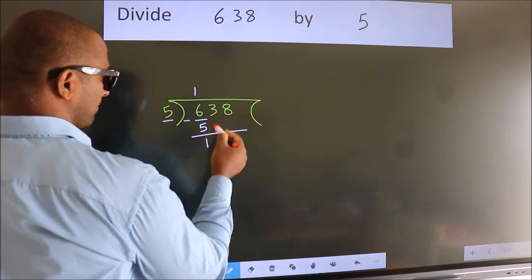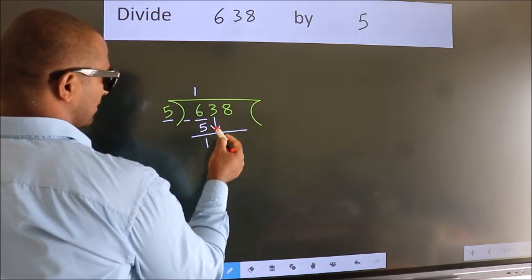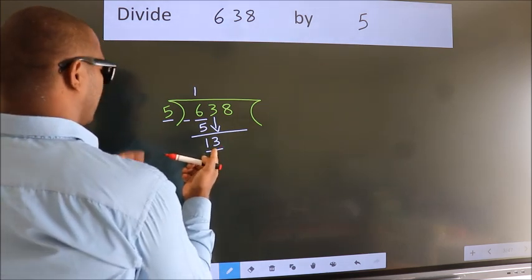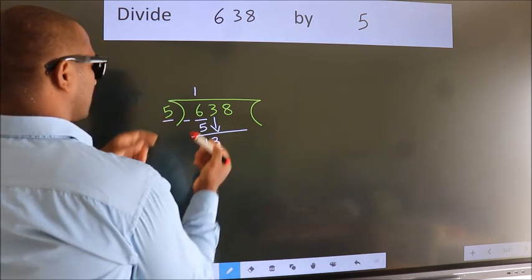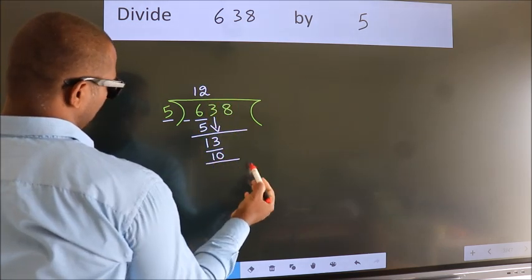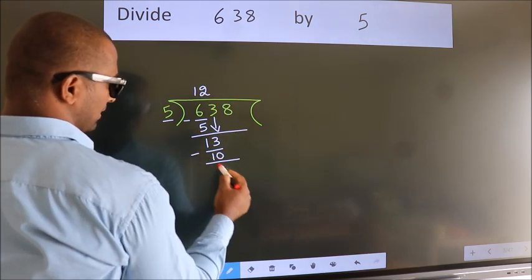After this, bring down the beside number. So 3 down. So 13. A number close to 13 in the 5 table is 5 twos, 10. Now we subtract. We get 3.